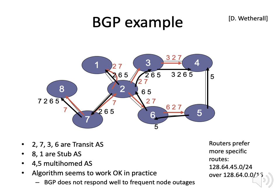One thing to note is that when announcing routes — which CIDR addresses you handle — routers tend to prefer a more specific route. So if you say you can handle 128.64.45.0/24, meaning only the final 8 host bits, and another router says it can handle 128.64.0.0/16, meaning all 65,000 hosts, a router will prefer the more specific route, feeling that it will be slightly faster to send data directly.